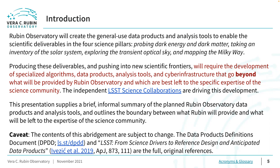I want to remind all viewers that the data products definitions document, the DPDD, available at ls.st/dpdd, remains the ultimate reference for descriptions of the planned LSST data products and pipelines. The publication "LSST: From Science Drivers to Reference Design and Anticipated Data Products" by Ivezic et al. 2019 is another formal resource for Rubin information.